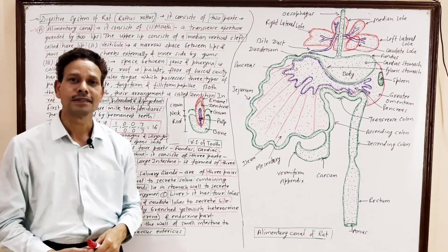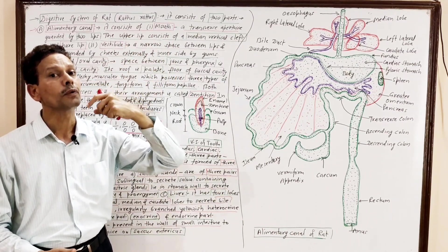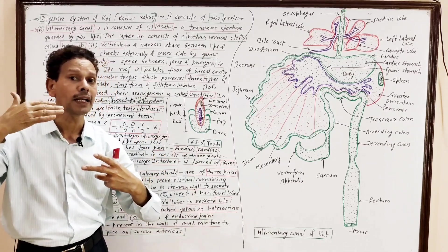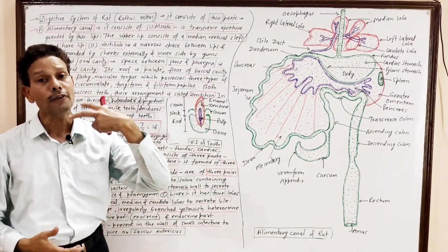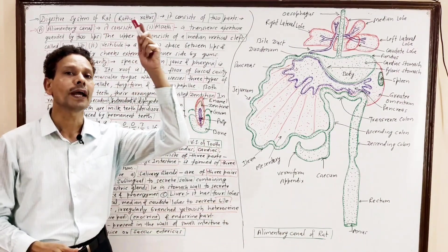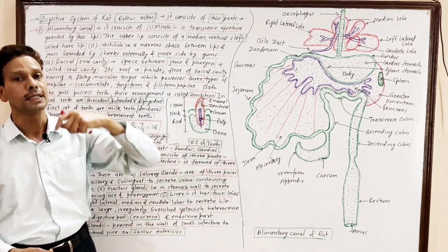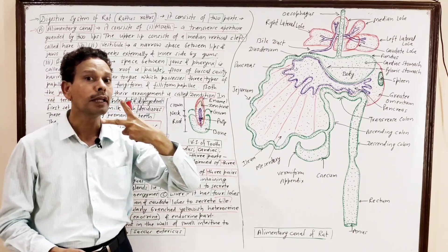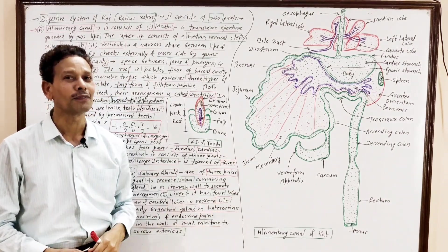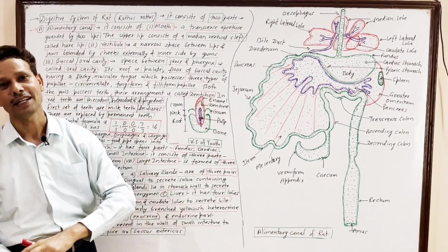The next part of the alimentary canal is the pharynx, located in the neck region. The pharynx is divided into three parts: the nasopharynx, which receives a pair of internal nares; the oropharynx, which is the median part receiving the oral cavity; and the laryngopharynx, which is the posterior part.